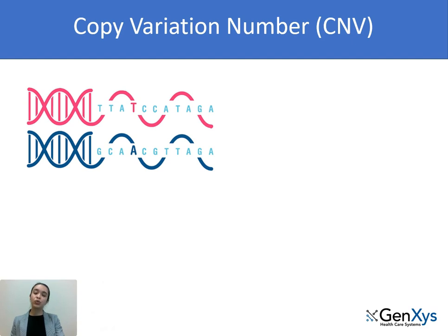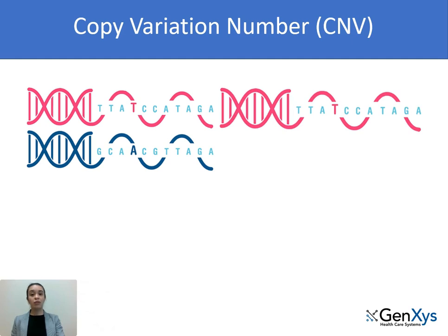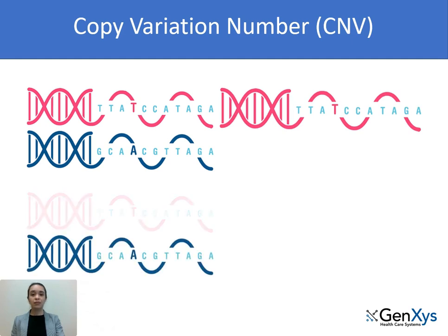Every person carries two copies of each gene — one inherited from our mother and another one from our father. However, for some genes such as CYP2A seeds and CYP2D seeds, people can have more than one copy, while others can have a deletion — that is, they have no copy available. This, along with the genotype of the SNPs known to affect the function of these genes, will determine the drug response of a patient.